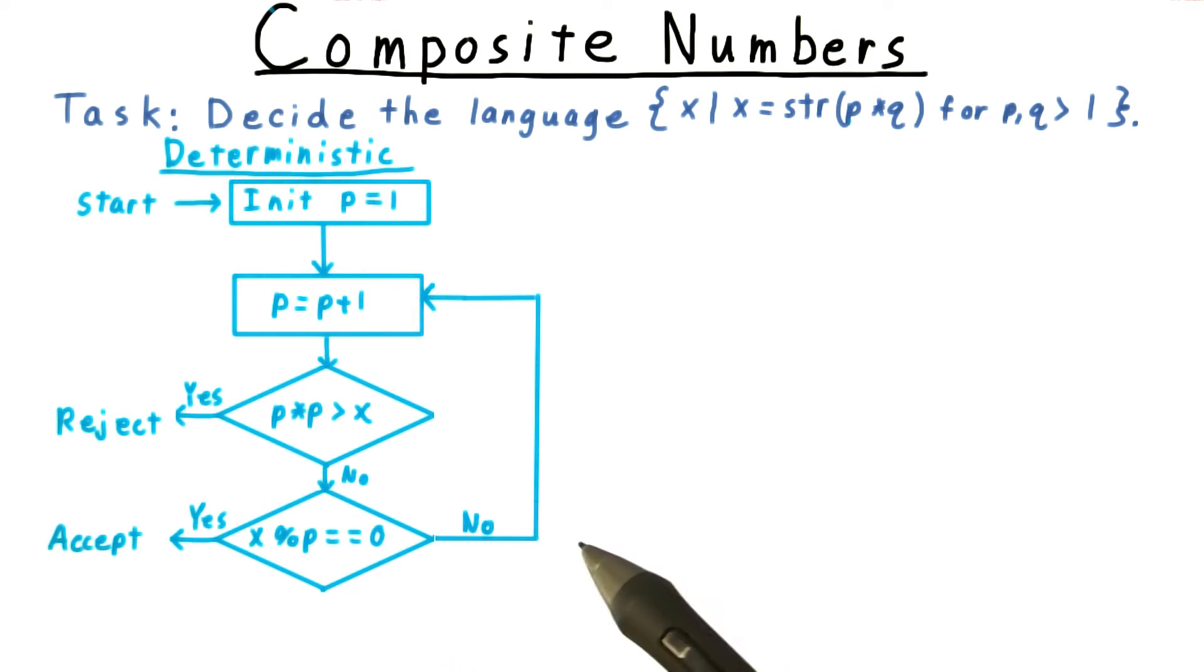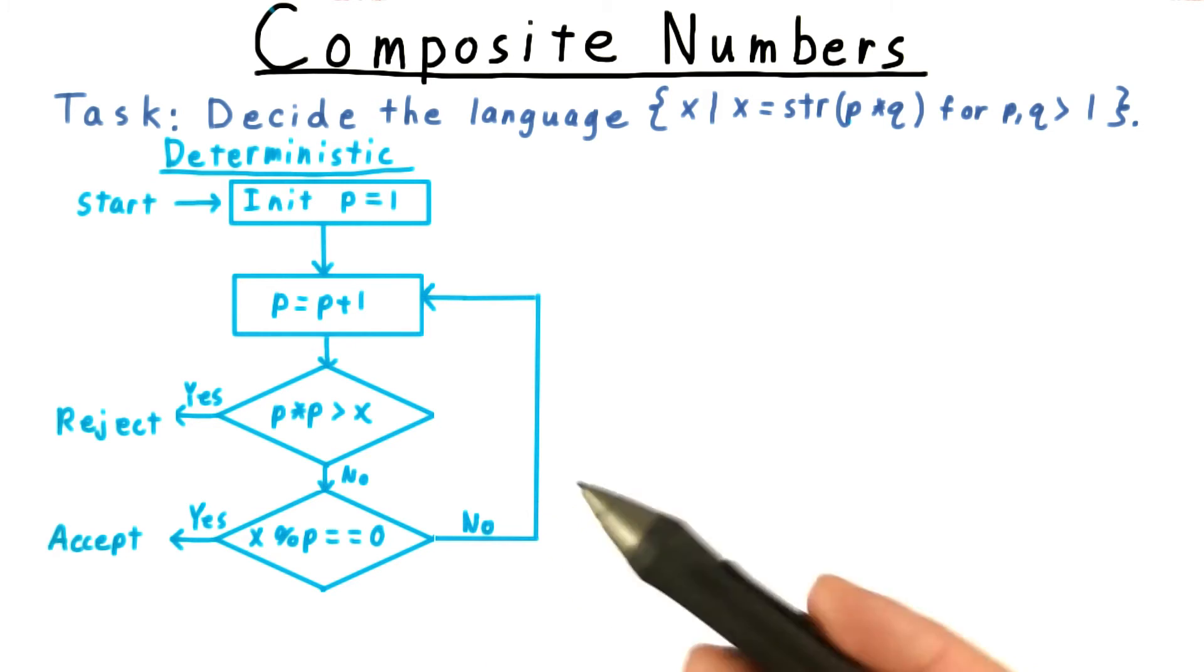Each iteration of this loop requires a number of steps that is polynomial in the number of bits used to represent x. Not so bad.